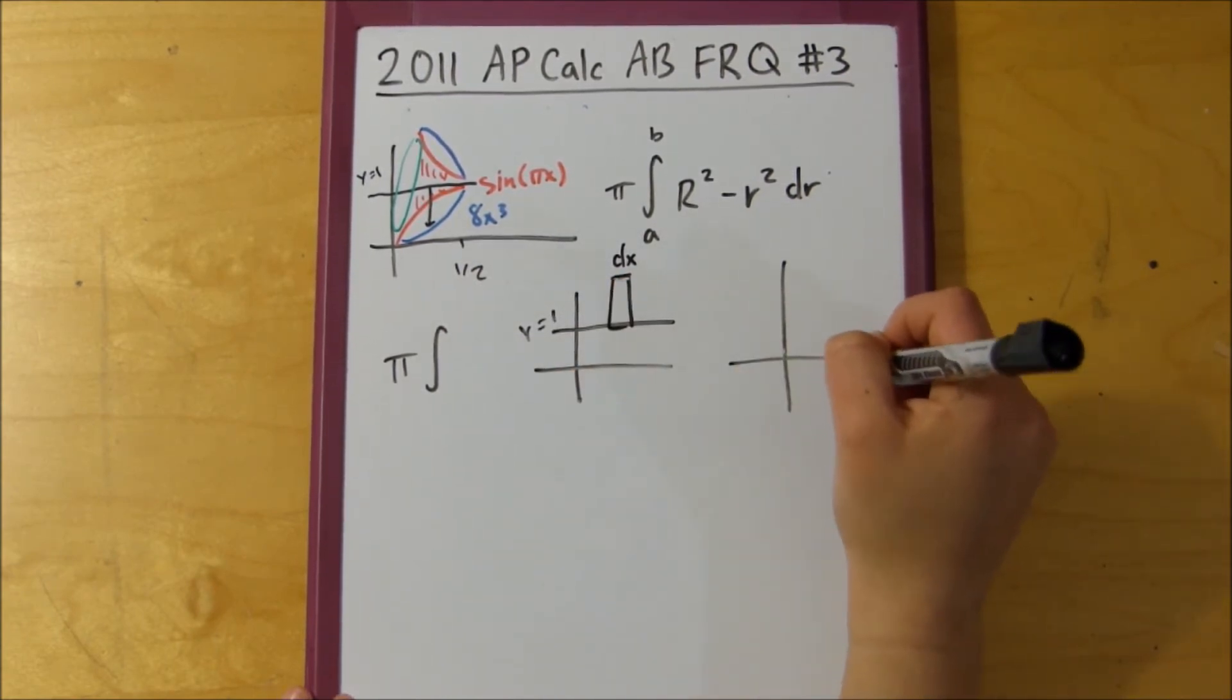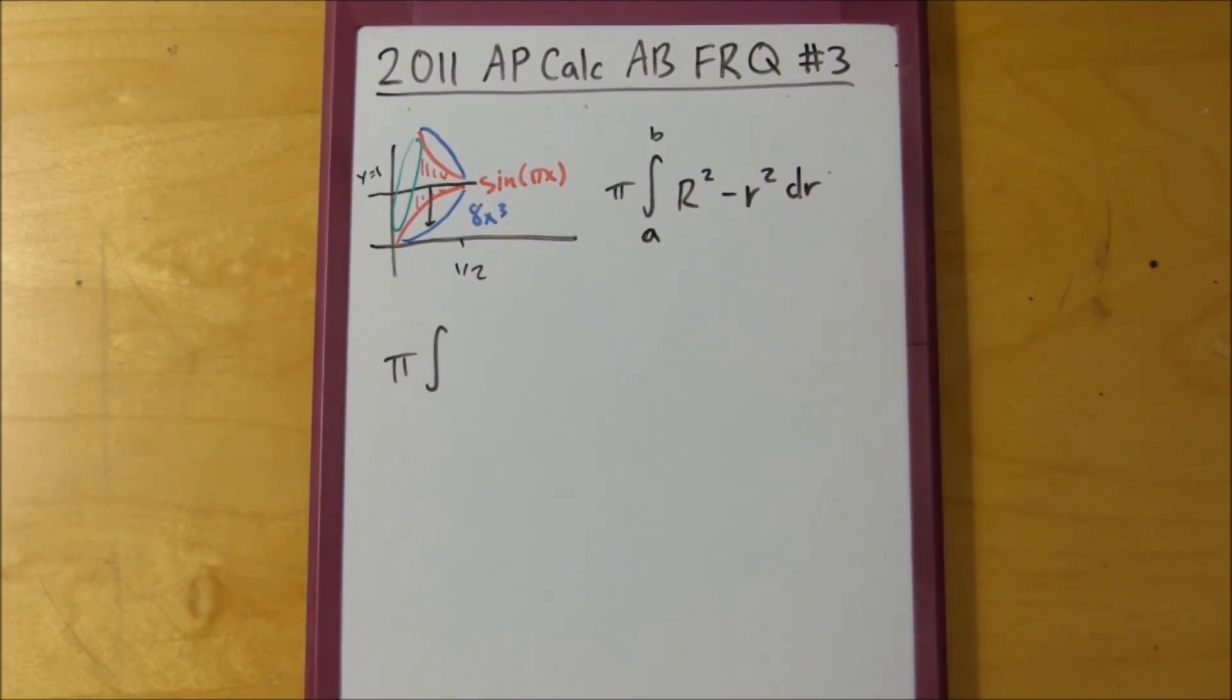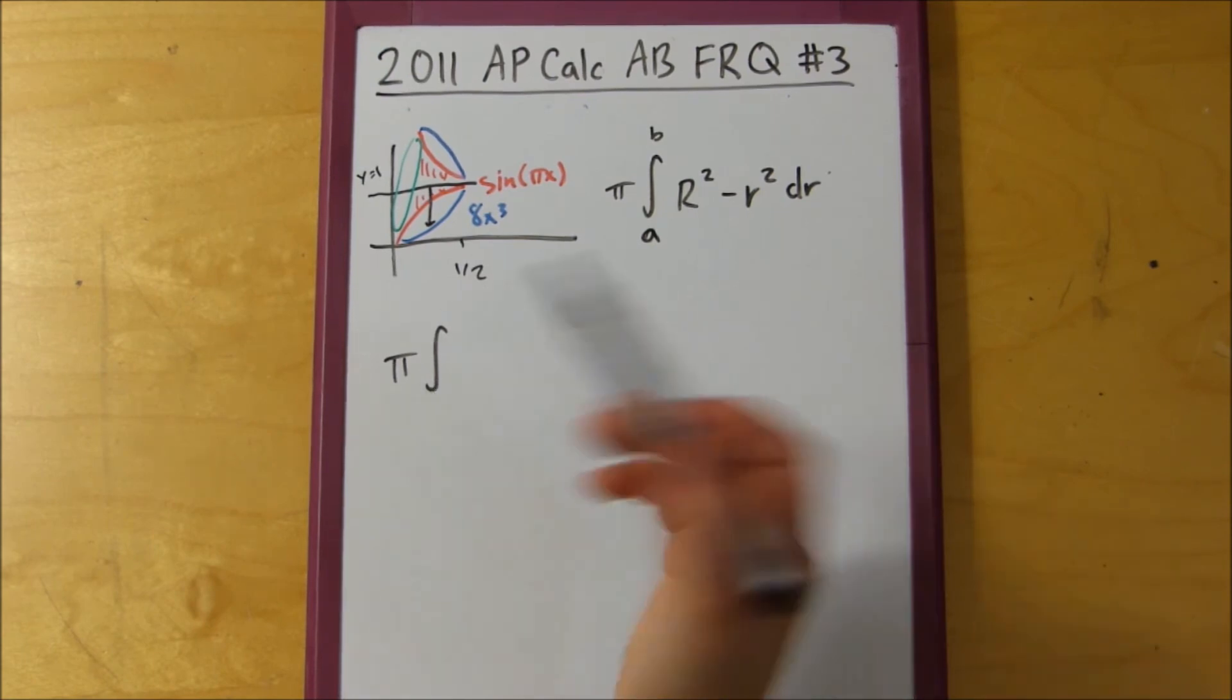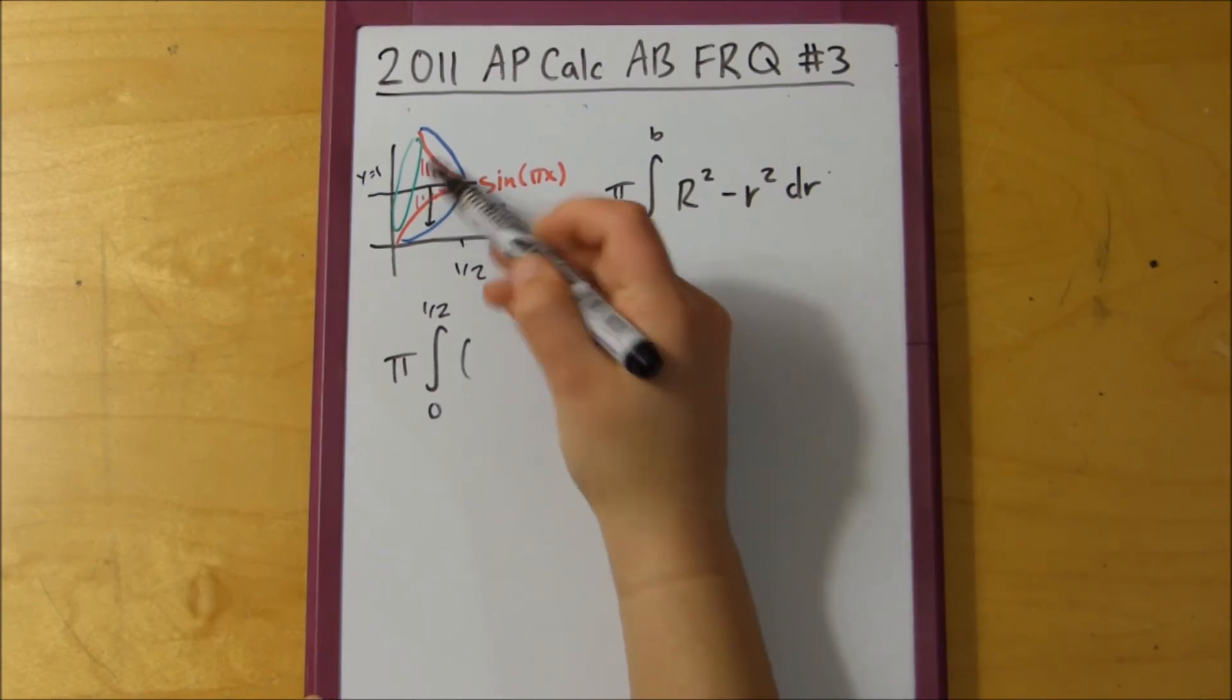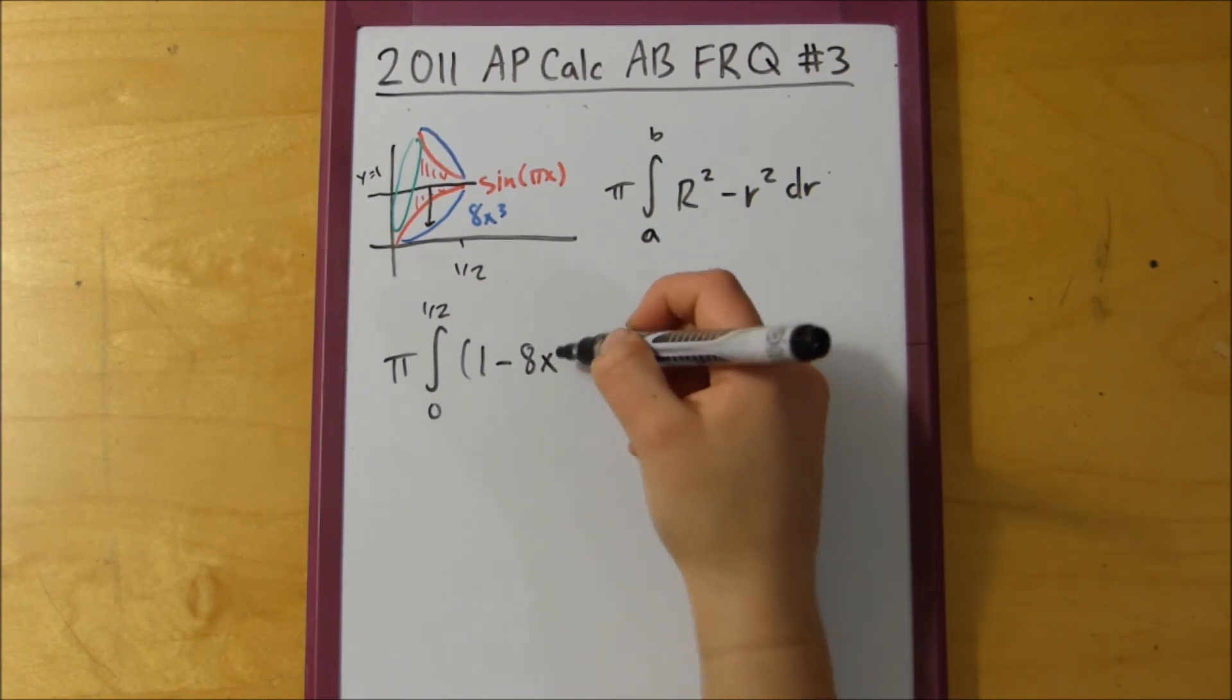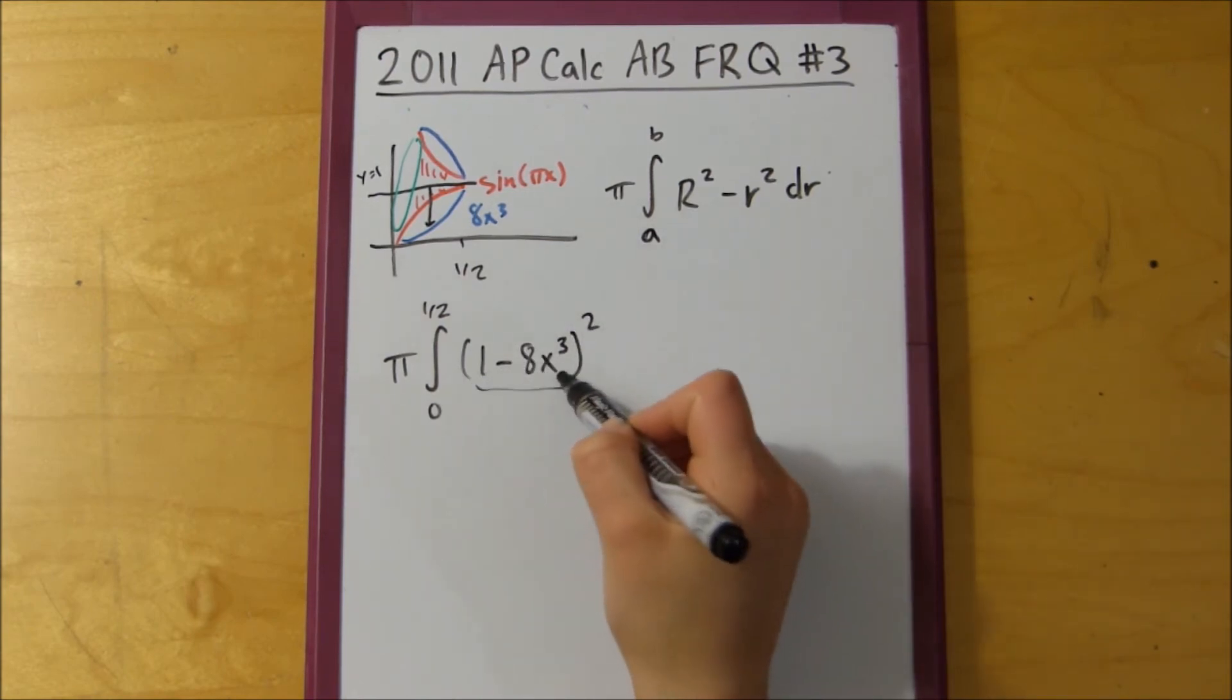This is y equals 1. Suppose we're revolving it around x equals 1, so over here. We would draw a perpendicular rectangle, and then this here is dy, so everything would have to be in terms of y, so you'd have to rewrite everything. So continuing along, because we've determined that this is all in terms of x, we know that our limits of integration are also going to be in terms of x, so from 0 to 1 half. And then we've determined that our big R, our big radius, is going to be 1 minus 8 times x to the third, squared. This would be our big R, and we have to square all of that.